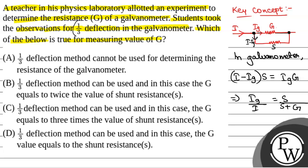Now, we have been given IG/I is 1/3, that is the deflection in galvanometer. So 1/3 = S/(S + G). From here we will have S + G = 3S, or G = 2S.